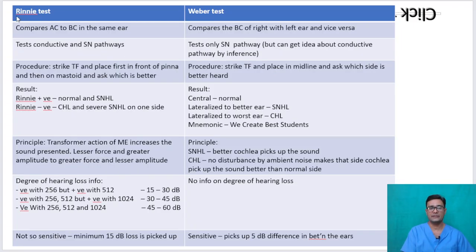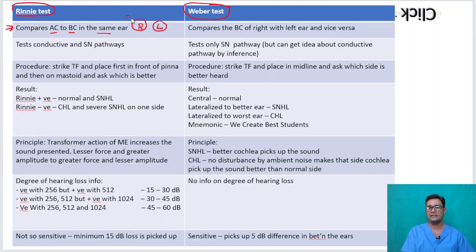Now the important part: comparing Rinne's test with Weber's test. In Rinne's test, we are comparing the air conduction to the bone conduction in the same ear — one ear at a time, whether right or left. We are not comparing the two ears; we are comparing air conduction with bone conduction of one ear. In Rinne's test we are testing both the conductive and sensorineural pathways.